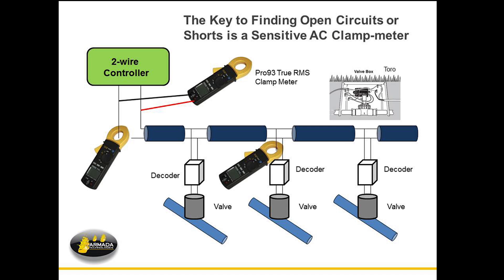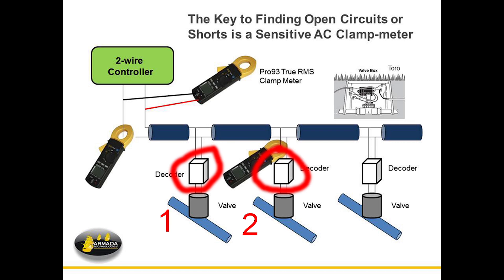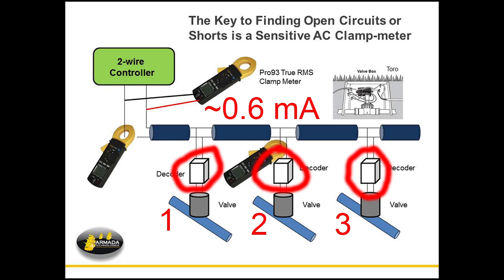Then you see a series of decoders here. In this case, we have three of them, but the system will continue on down. Typically, a decoder will draw 0.6 milliamps per decoder, but specs will change based on manufacturer. It might be higher or could be a whole lot lower.